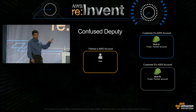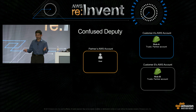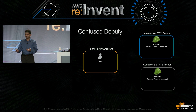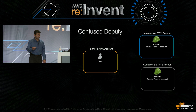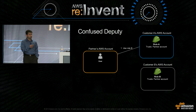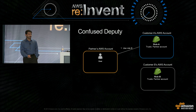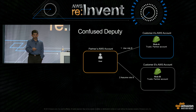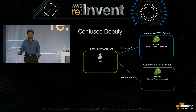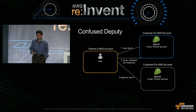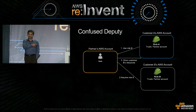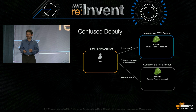Let's say there is a partner with two customers, customer A and customer B. Both have created roles in their account, and both trust the partner's account. Since role names are not secret, there is nothing preventing customer A from going to the partner software and saying 'use role B' — which is actually in customer B's account. Since role B trusts the partner's account, the IAM user in the partner's account can assume the role and enumerate resources in customer B's account, which means that information might be disclosed to customer A. In this case, the partner's AWS account is the confused deputy.